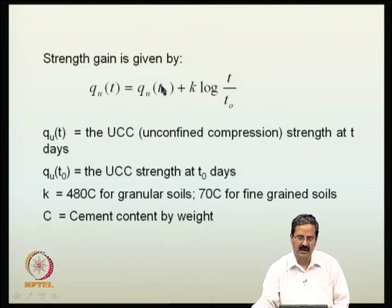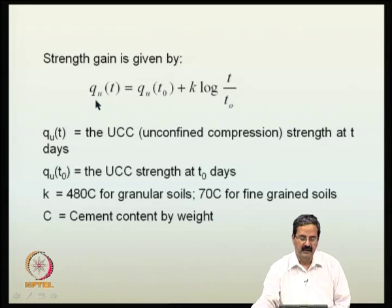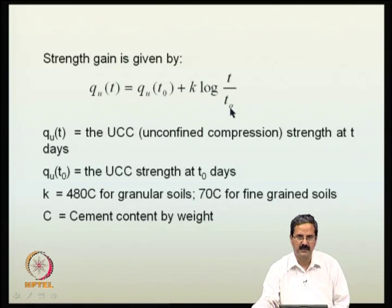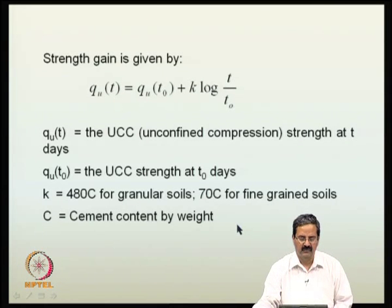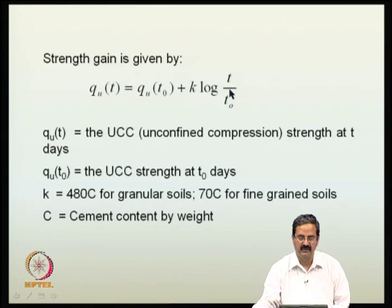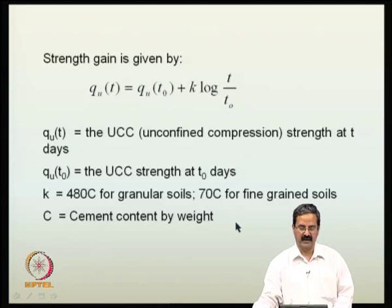Professor James K. Mitchell, a well-known authority in soil mechanics, proposed a simple equation for strength gain: the undrained strength at any time equals the undrained strength at T₀ days plus K times log(T/T₀). Here K is approximately 480C for granular soils and 70C for fine-grained soils, where C is the cement content by weight. This equation shows that strength gain is a function of time as well as the type of soil.